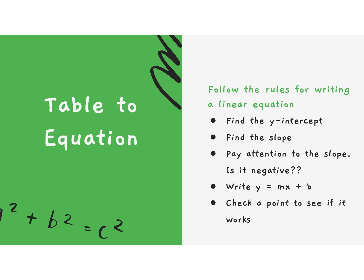Our second learning target is how to write the equation from a table. The rules are: you find the y-intercept first — that's always where we start. Then you find the slope, and pay attention to whether it is negative. Then you put the m and the b into the y equals mx plus b equation, and throw in a point to check to see if it works.